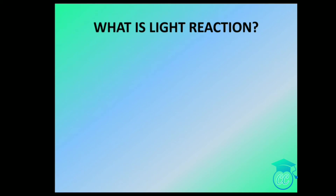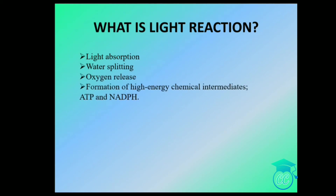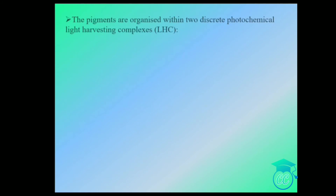In the light reaction, the processes include light absorption, water splitting, oxygen release, and the formation of high-energy chemical intermediates such as ATP and NADPH. The pigments are organized within two discrete photochemical light-harvesting complexes: Photosystem I and Photosystem II.